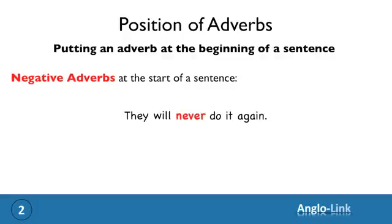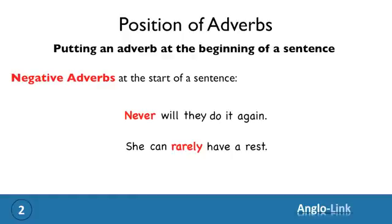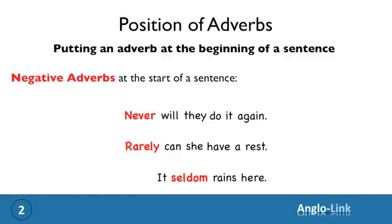Remember the sentence: 'They will never do it again.' Now, if you put 'never' to the start of the sentence, you will have to invert — switch the places of the subject and the auxiliary: 'Never will they do it again.' Another example: 'She can rarely have a rest.' If you want to emphasize 'rarely' and put it at the start, you need to invert: 'Rarely can she have a rest.' A slightly more complicated example: 'It seldom rains here.' If you put 'seldom' to the beginning, you need to bring in the auxiliary for the inversion. As this is present simple tense, your auxiliary is 'does': 'Seldom does it rain here.'